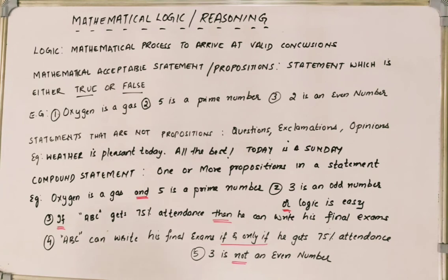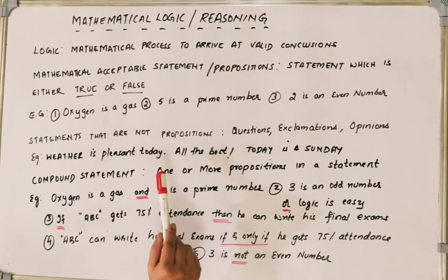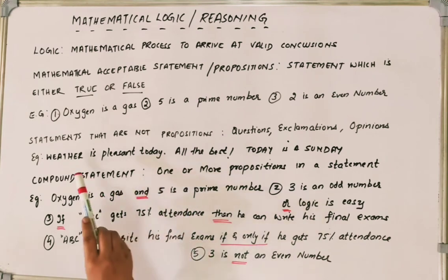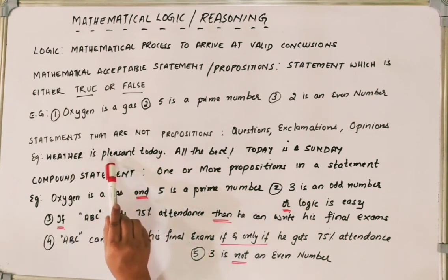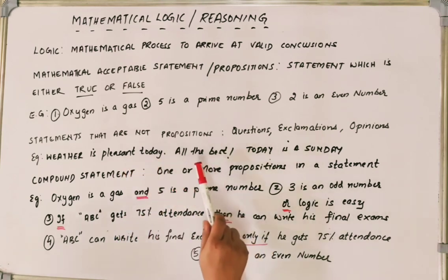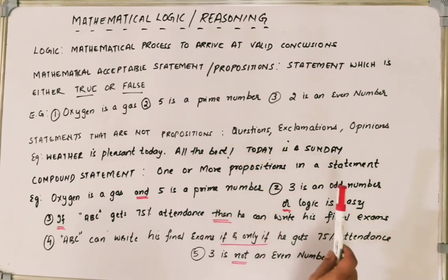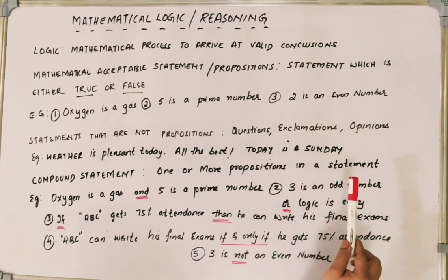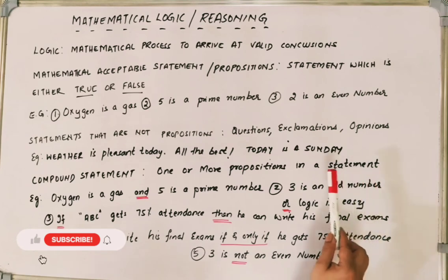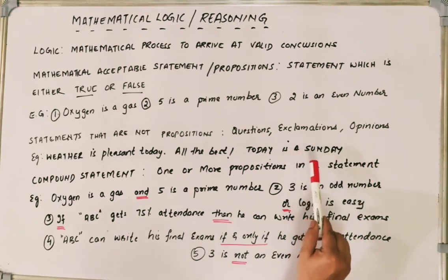There are statements which are not mathematically acceptable, such as statements which are questions, exclamations, or opinions. For example, 'weather is pleasant today' is a subjective statement — it can be pleasant today and something else tomorrow. It does not give a fixed true or false answer because it is subjective based on the person, place, and time. Similarly, 'all the best' is just an exclamation — you cannot say it is true or false.